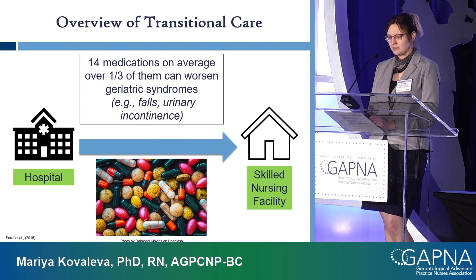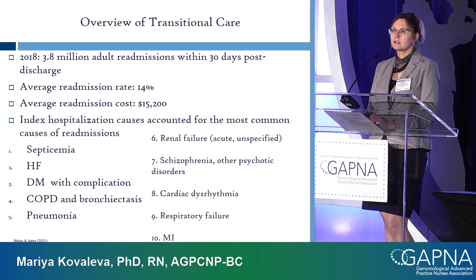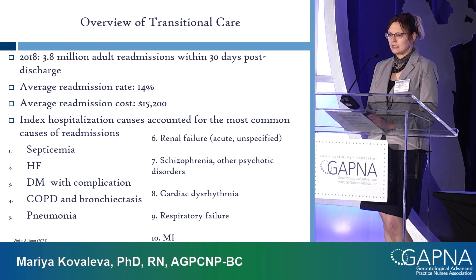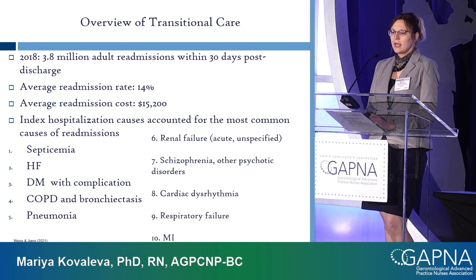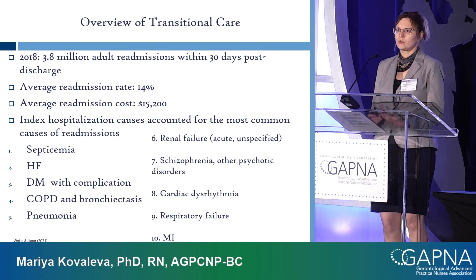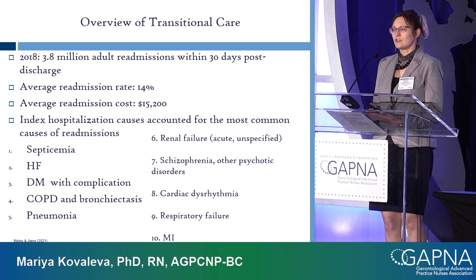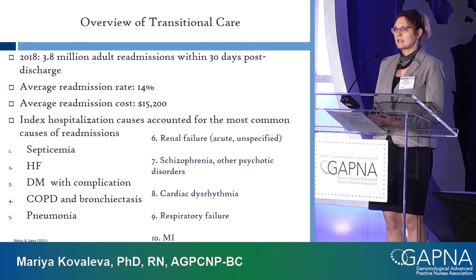According to the Agency for Healthcare Research and Quality, in 2018 a little under 4 million adult readmissions happened in the U.S. — adult, not just 65 plus. That translates to a 14% readmission rate, which is higher for older adults, with an average cost of over $15,000. Interestingly, the causes of readmission are often the same things that brought the person into the hospital in the first place — things probably just did not get solved, cured, or managed properly, and the person returns with the exact same problem.